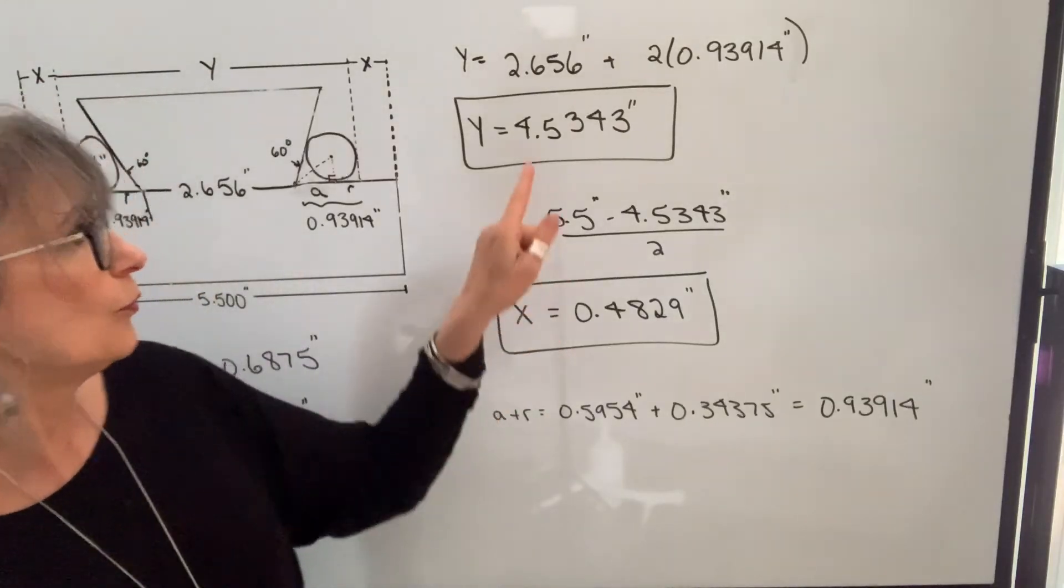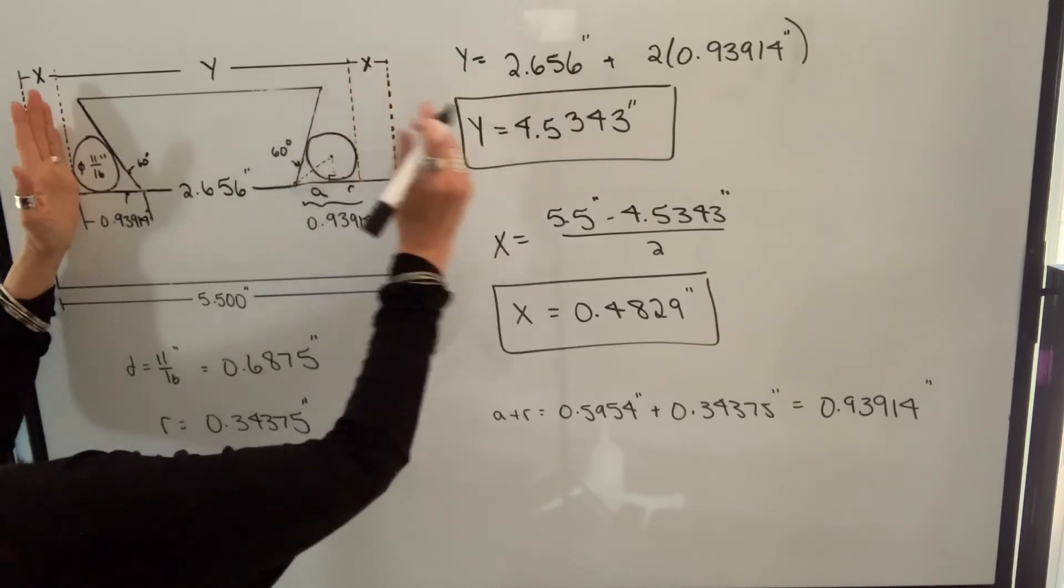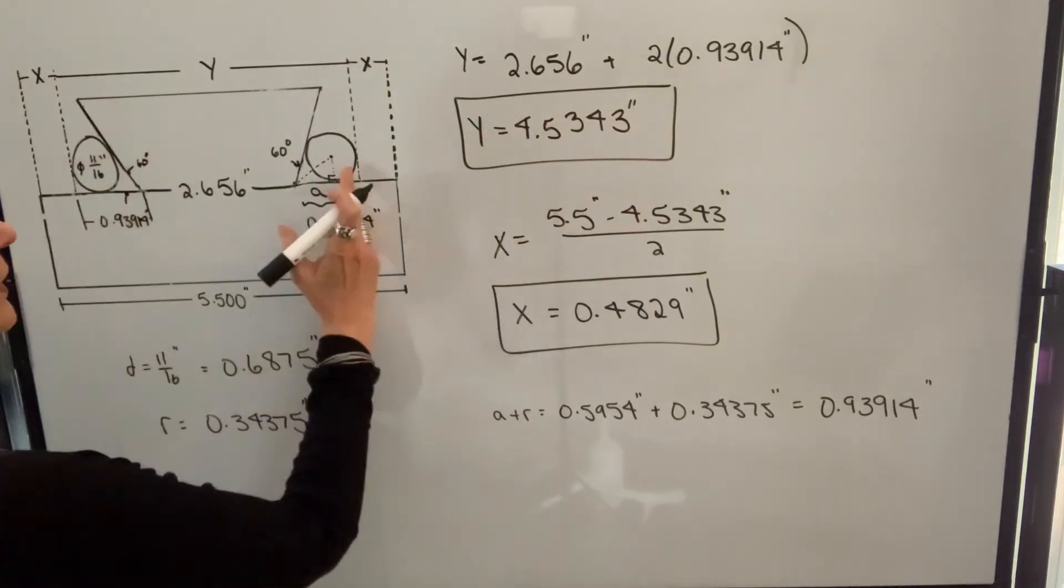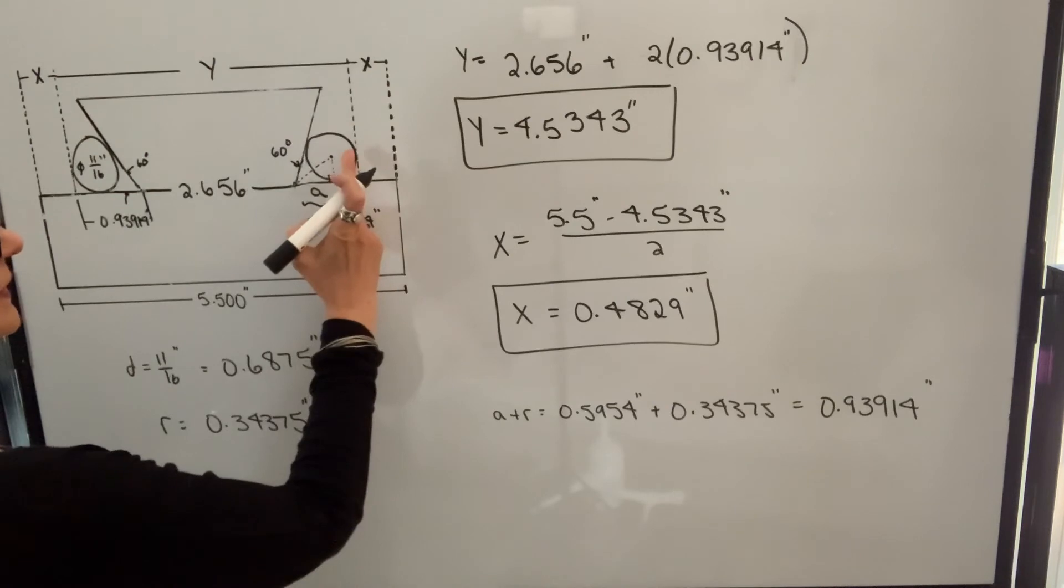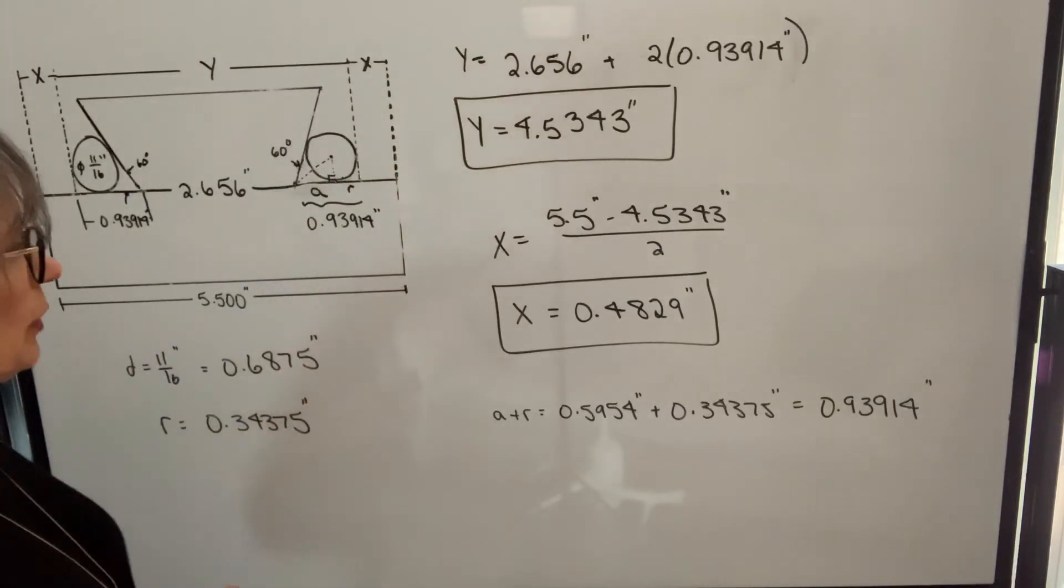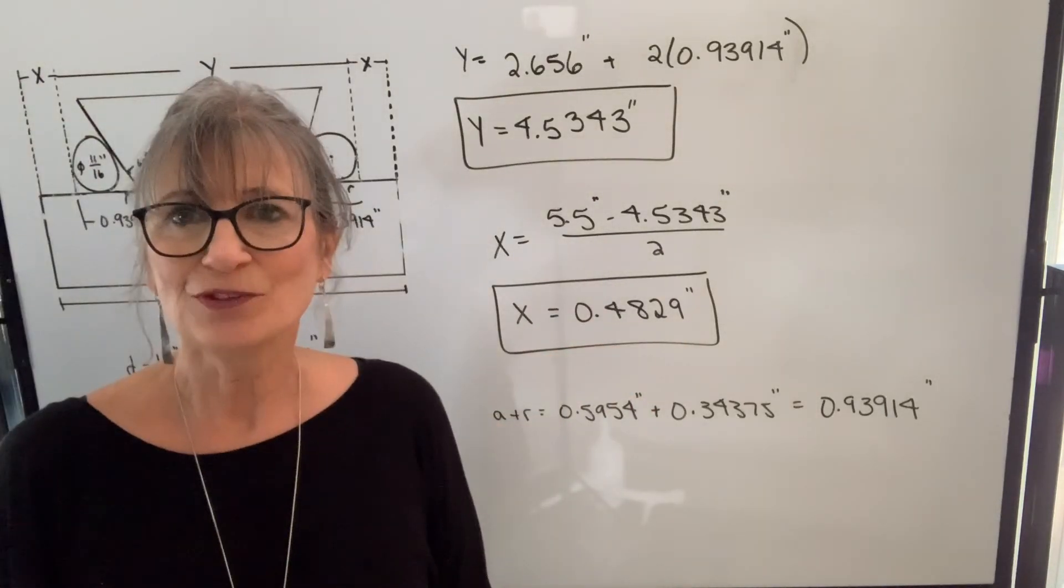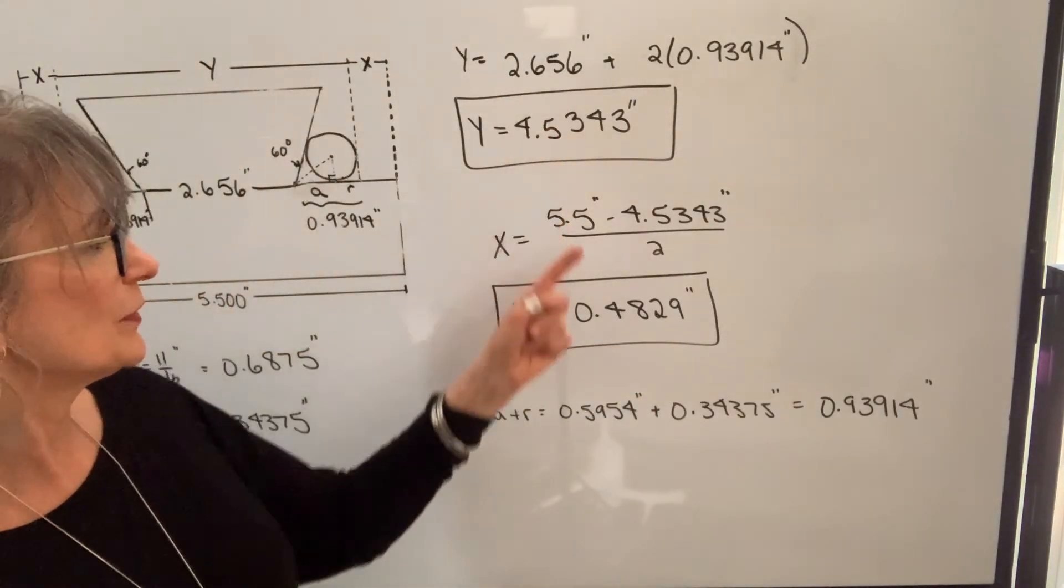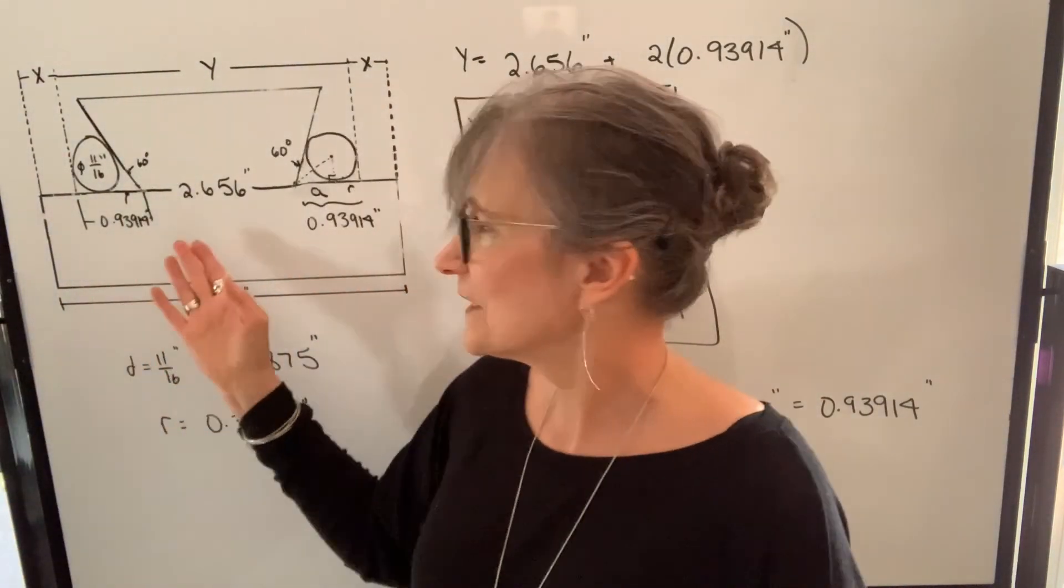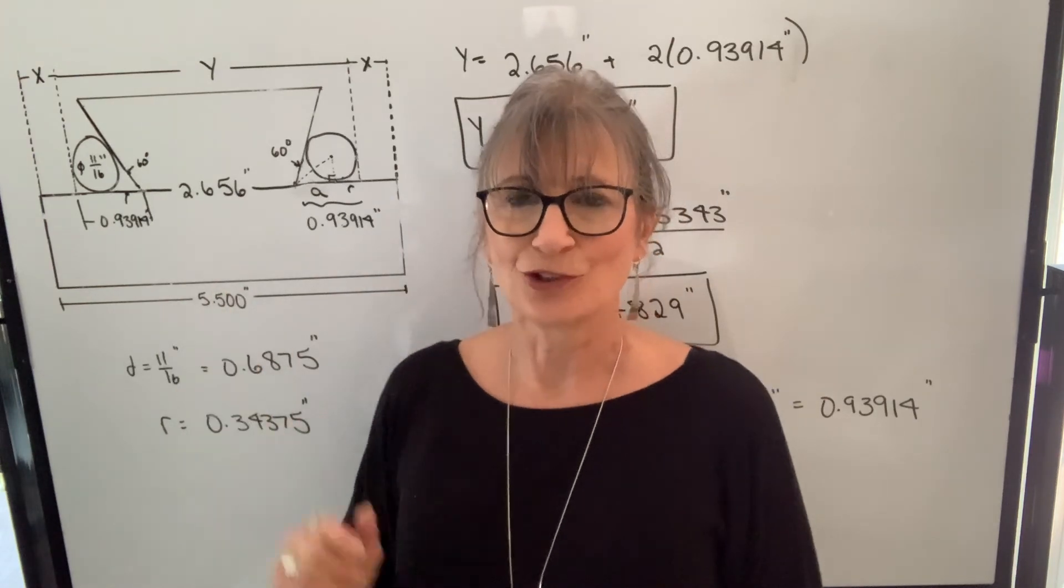Now you know what the distance between the crown of the pin should be, 4.5343 inches. You also know X, which is the distance from the crown of the pin to the edge or the side of the block, should be 0.4829 inches. So if your measurements are consistent with these, then you know that your dovetail has the dimensions that are on the blueprint and it's positioned correctly.